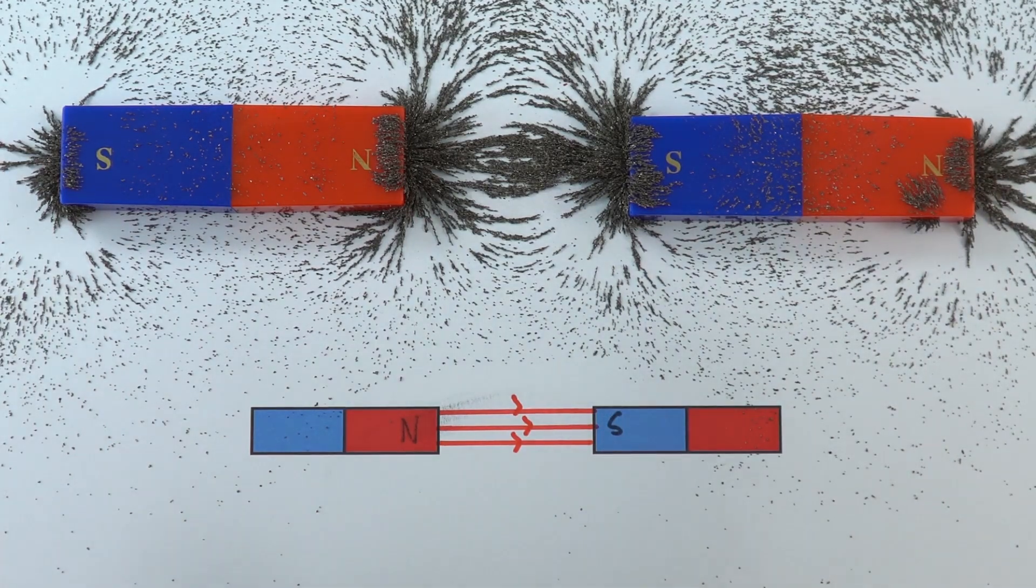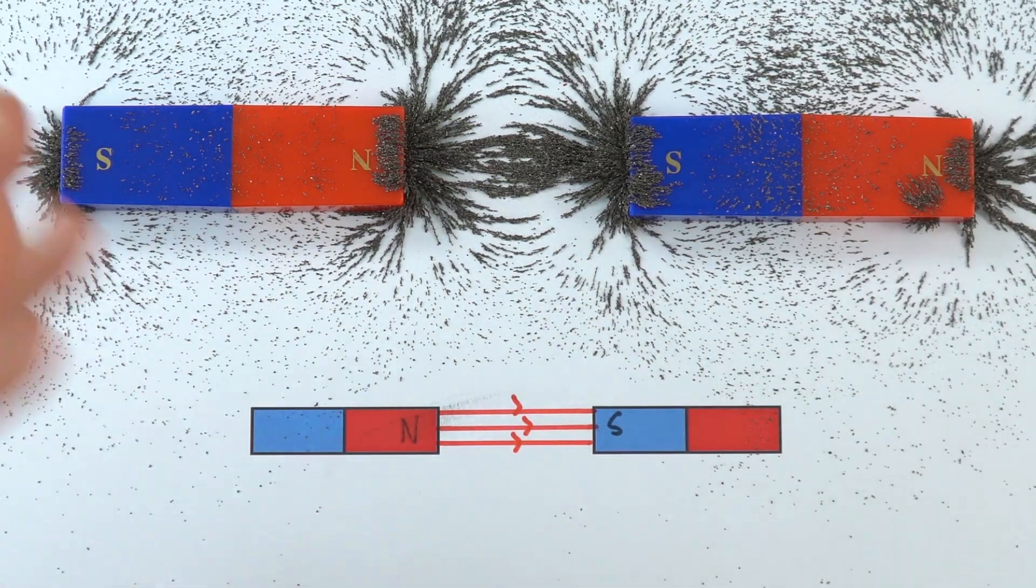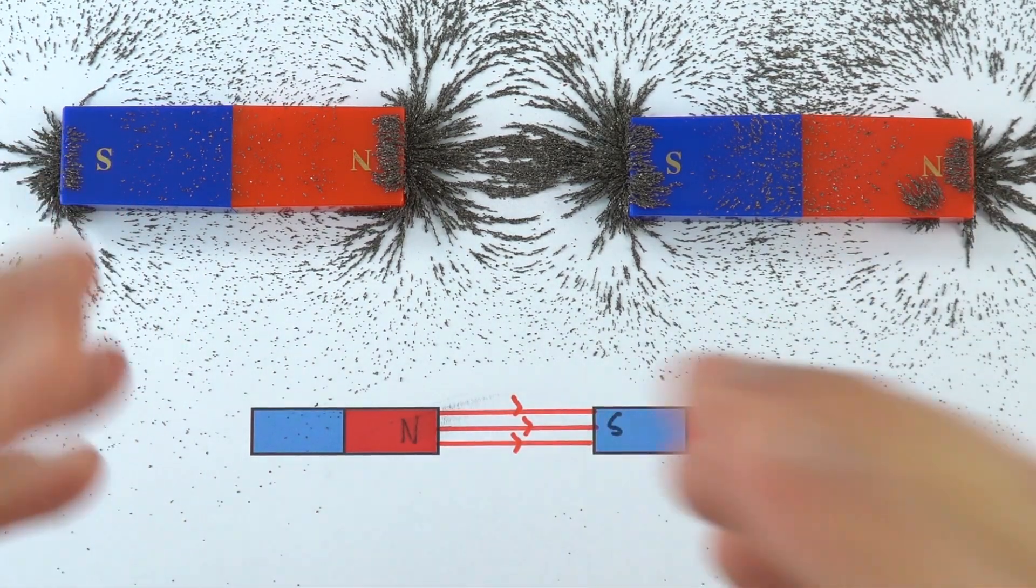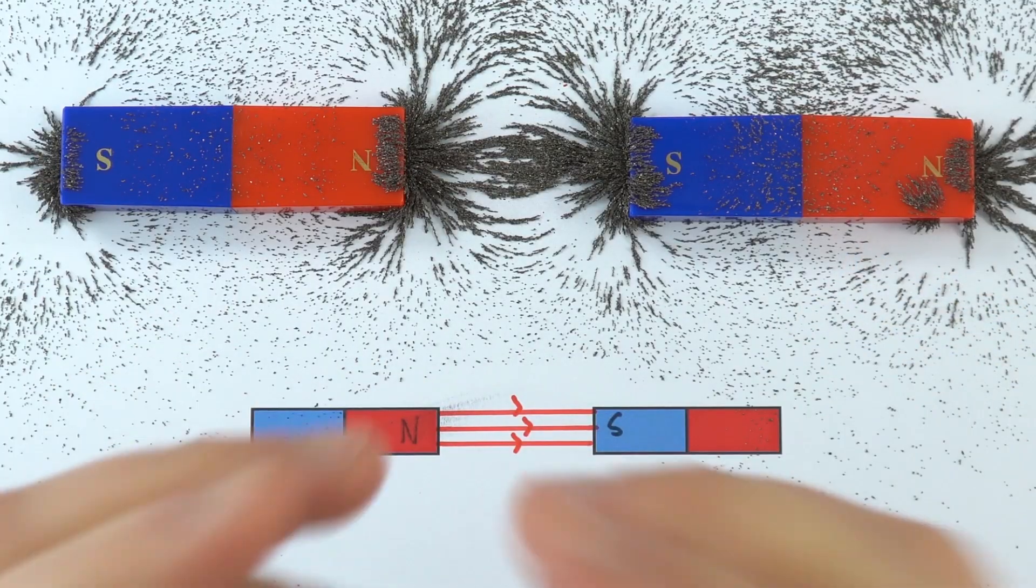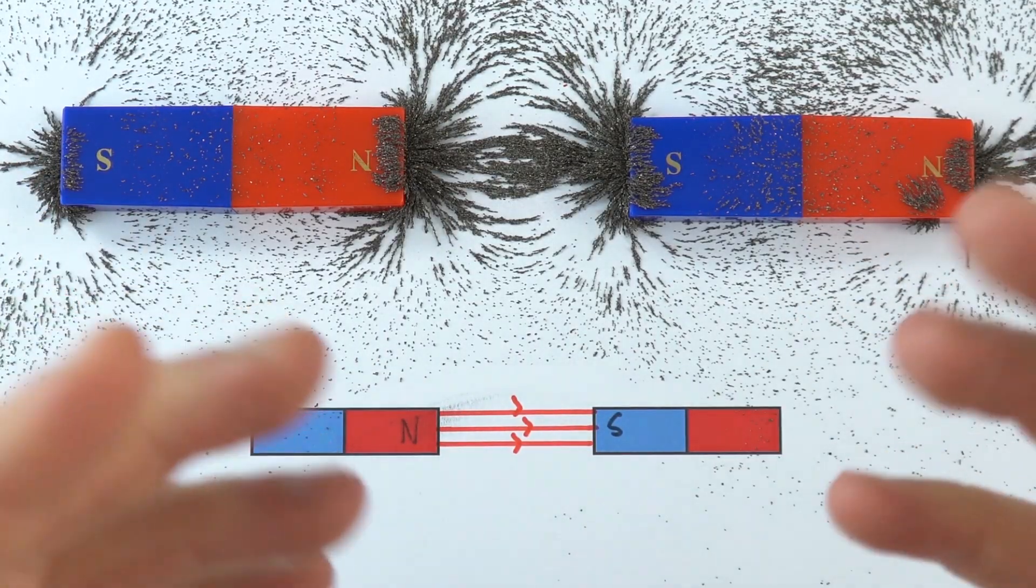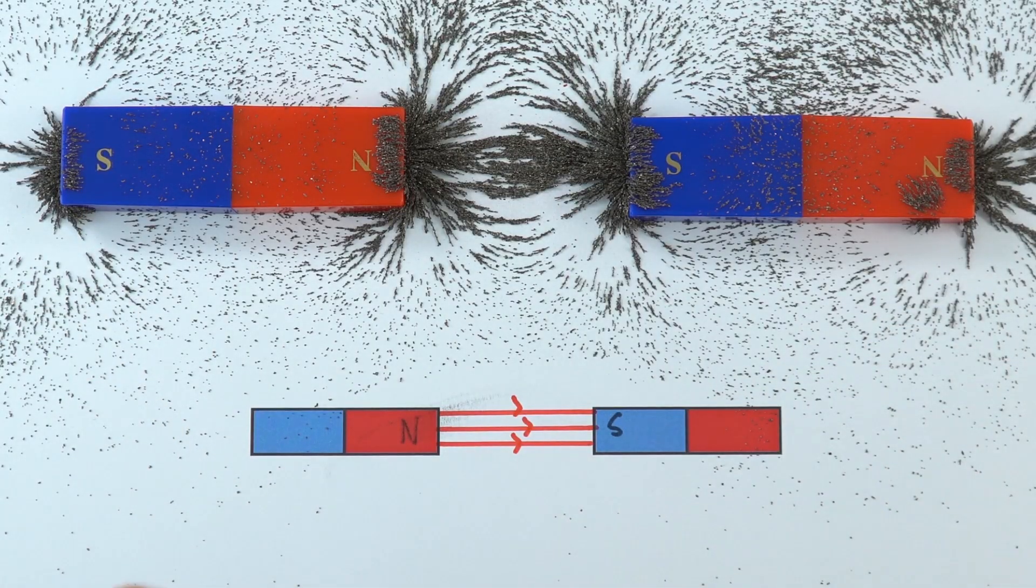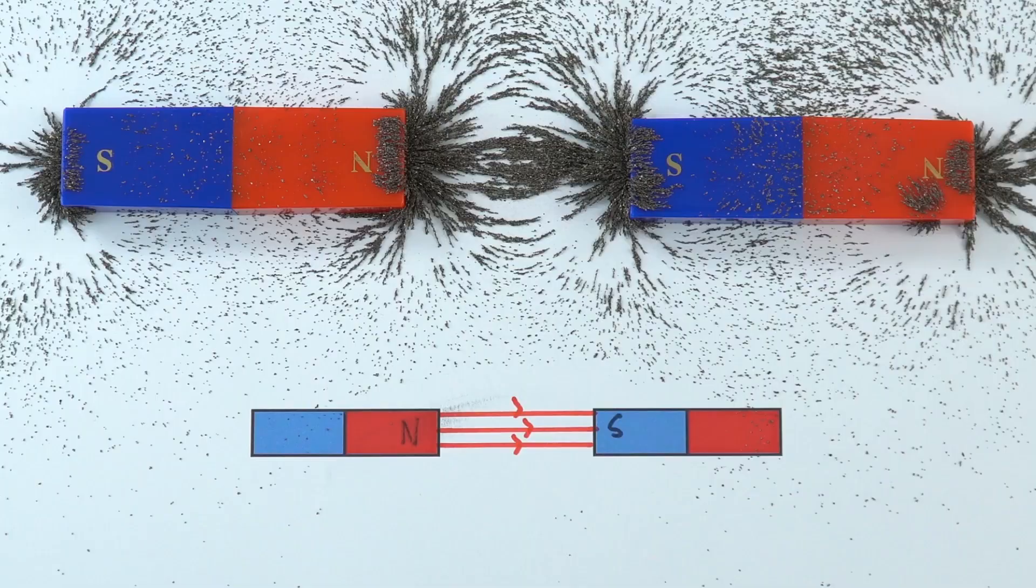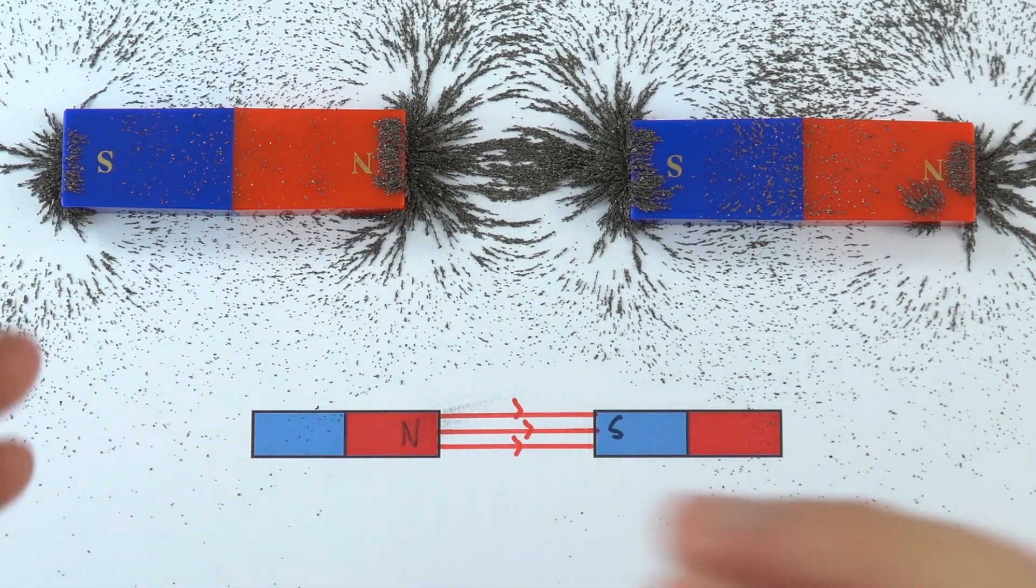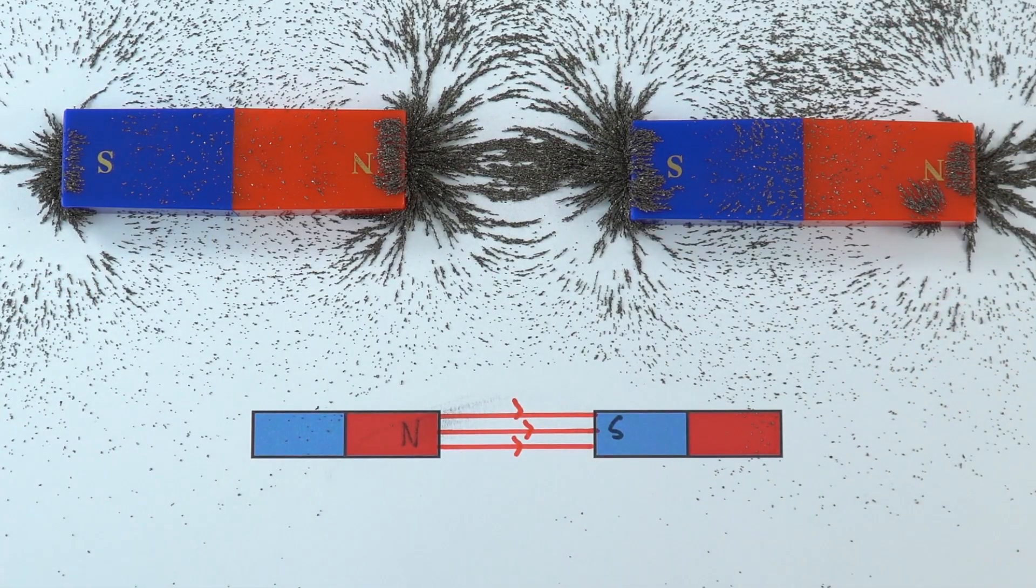There are some of the field lines around permanent magnets but sometimes it's more useful to have a magnet that you can turn on and turn off. What we then have is an electromagnet. An electromagnet is when you've got a conductor, for example a piece of wire that has a current in it. When that's happening we then get a magnetic field around the wire and therefore we have an electromagnet.